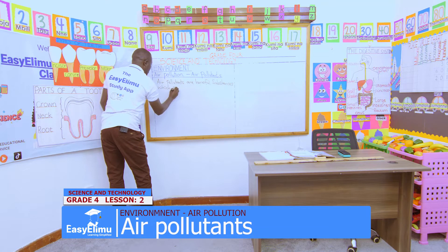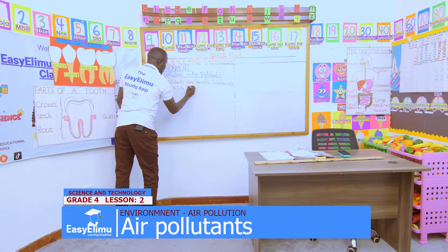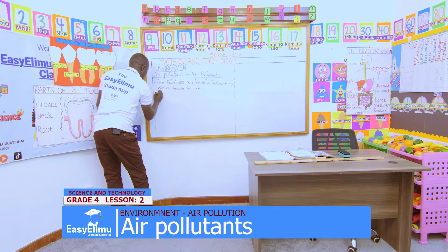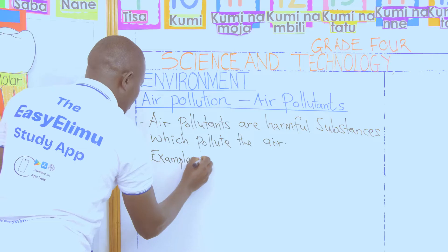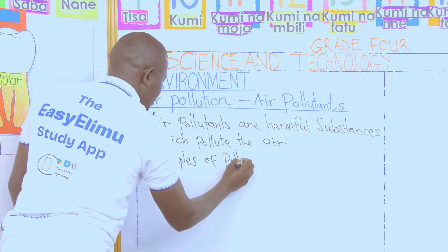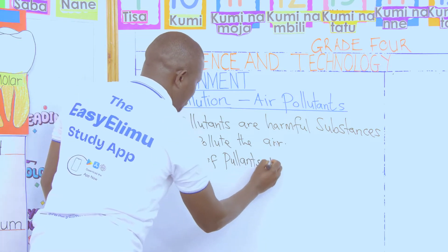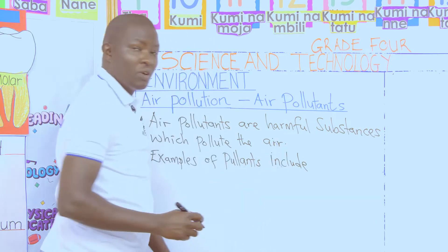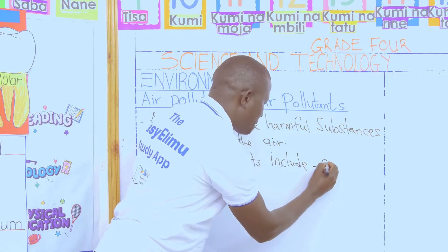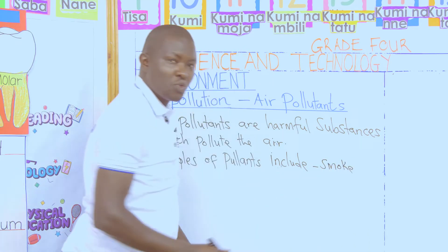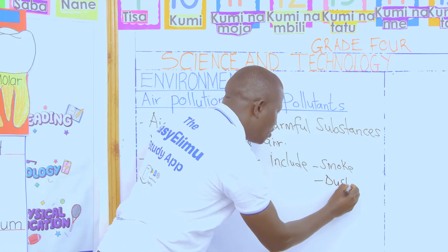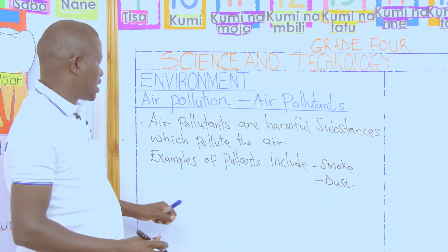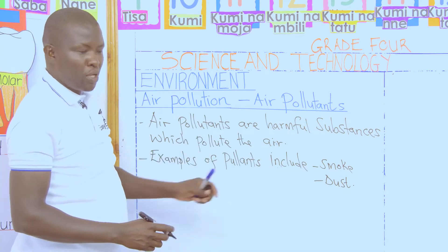Some of these harmful substances pollute the air, and you have given me examples. Examples of pollutants include — Victoria said smoke, and John mentioned dust. These are harmful substances that have been introduced into the atmosphere, and we call them pollutants.